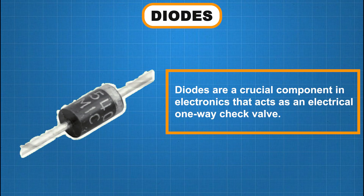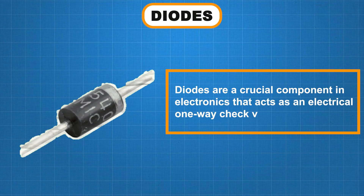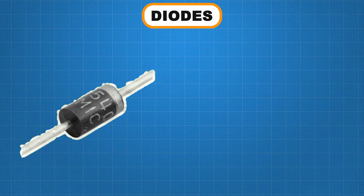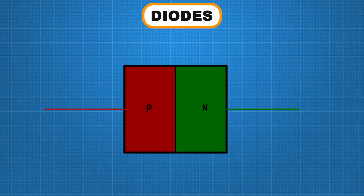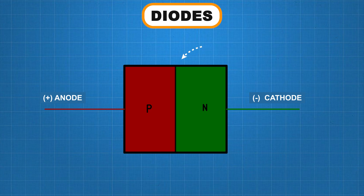Diodes are a crucial component in electronics that acts as an electrical one-way check valve. A diode is created by combining two materials, P-type and N-type. The term diode means two electrodes, and that's exactly what it has. The positive electrode is called the anode and the negative electrode is the cathode. The point where these two materials meet is called the junction.